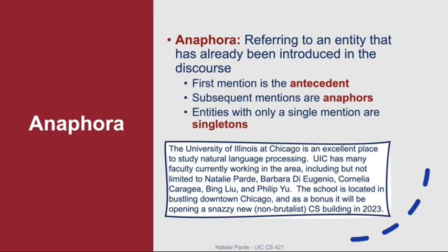An anaphor is a referring expression that refers to a referent that has already been introduced in the discourse. So assuming you have multiple referring expressions in a discourse that all refer to the same referent, the first of those referring expressions that occurs is the antecedent, and all the remainder are anaphors. When entities are only mentioned once in a discourse, they're sometimes referred to as singletons.